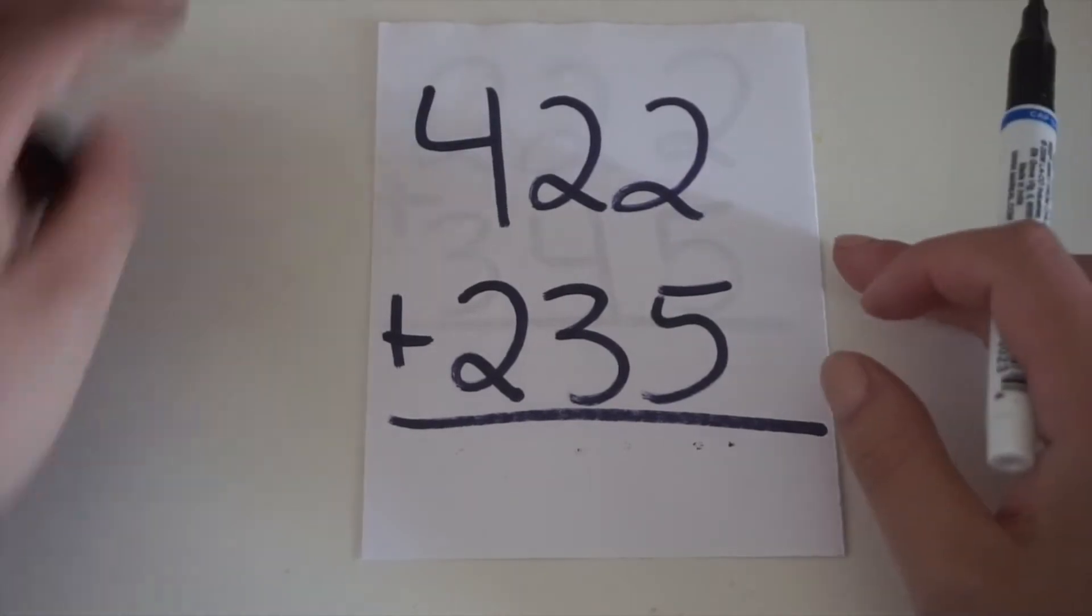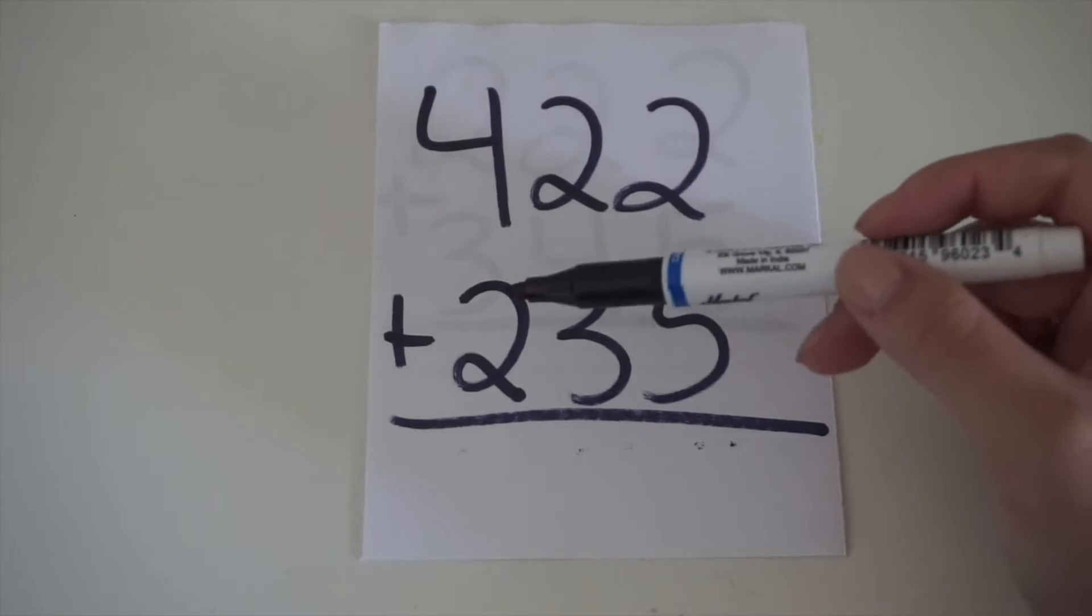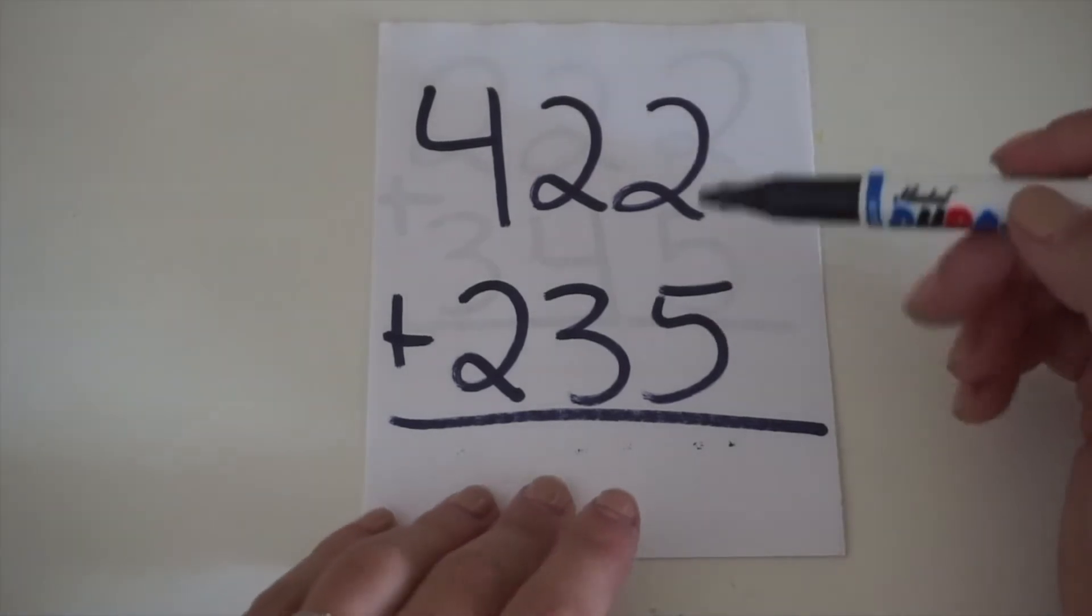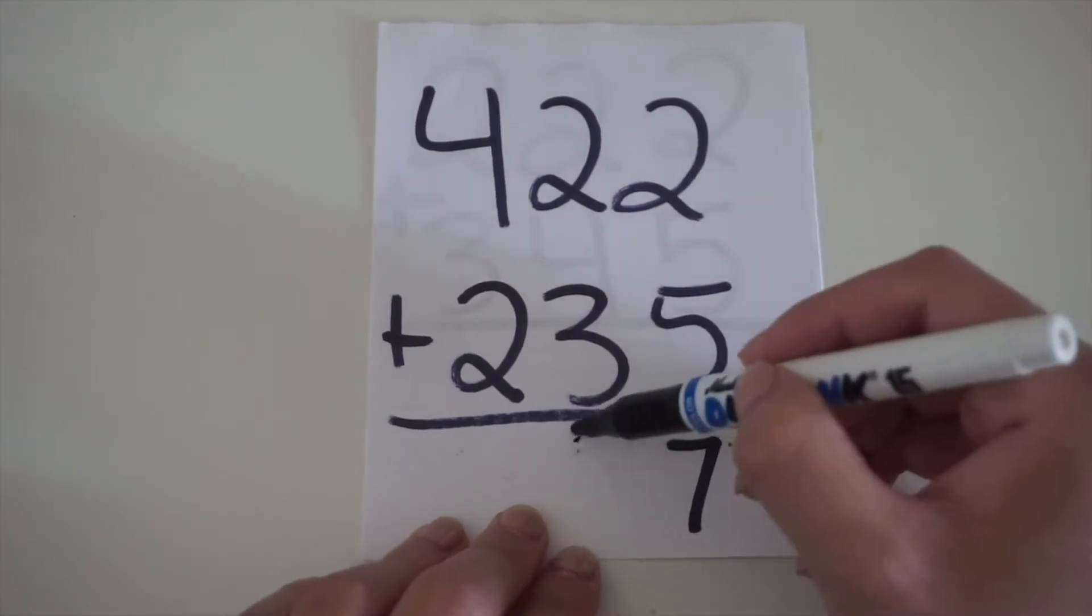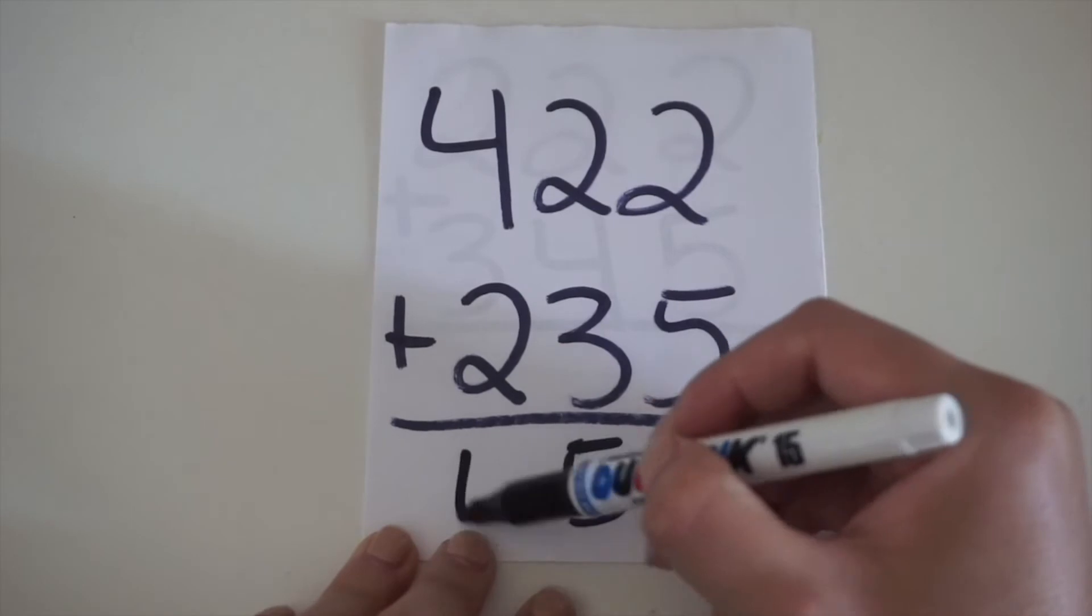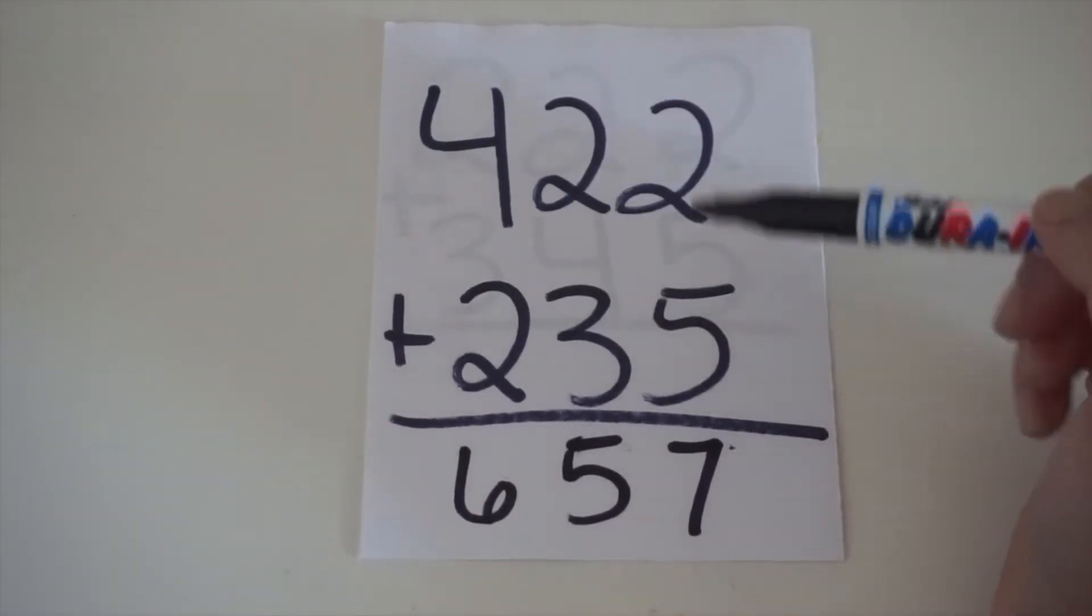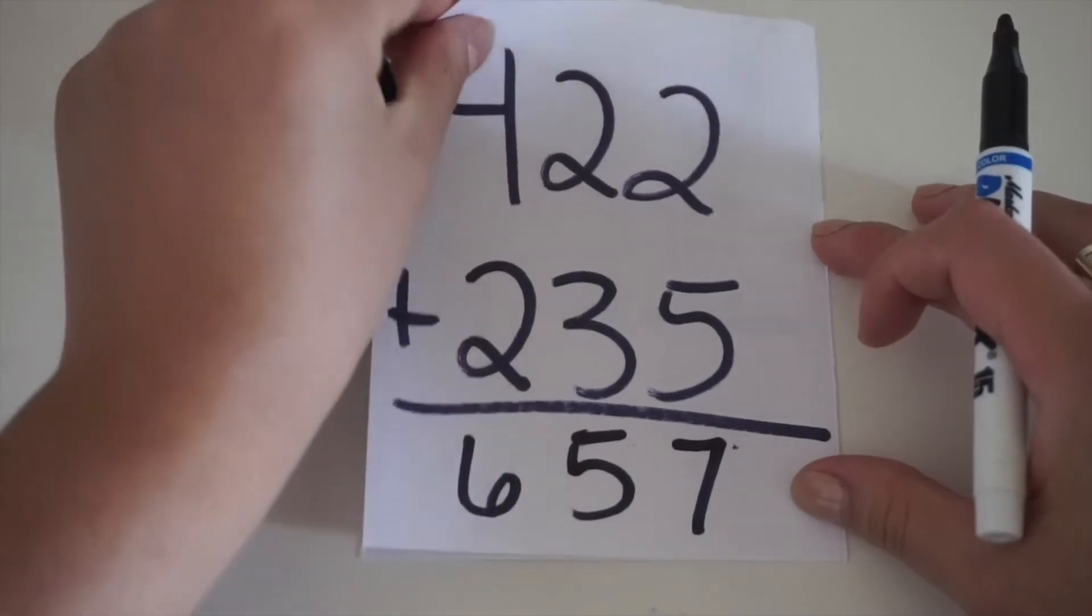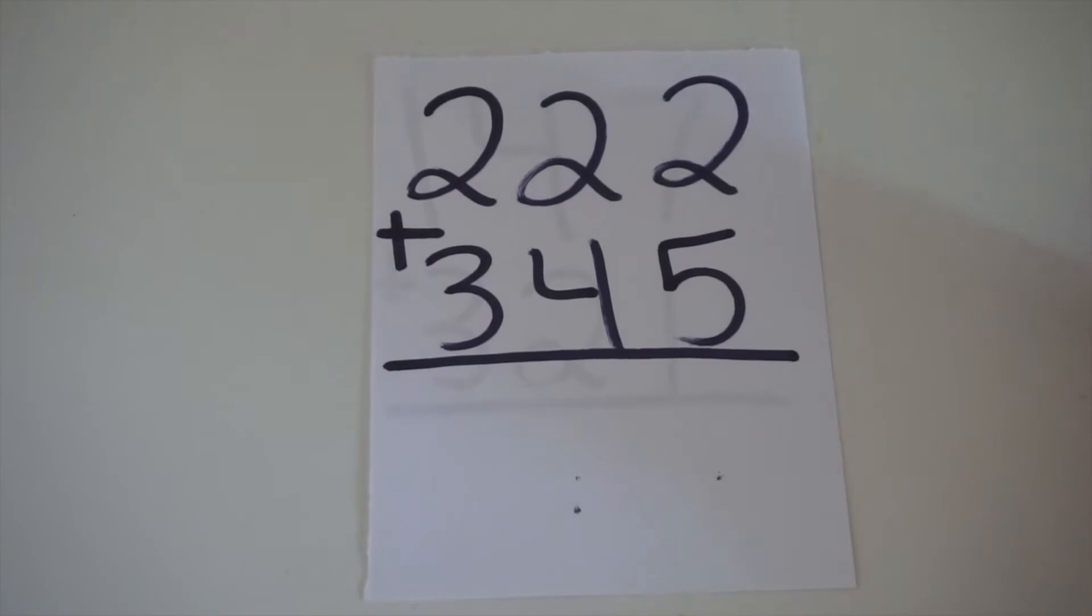Next equation, we have 422 plus 235. Again, from up to down, right to left. 5 plus 2 equals 7, 3 plus 2 equals 5, and 4 plus 2 equals 6. So, 422 plus 235 equals 657. And if you always want to check your answers, you can do that with a calculator or you can have mom and dad check it for you.